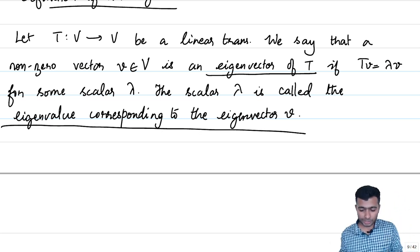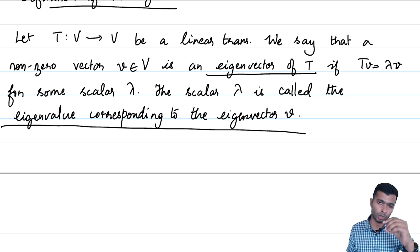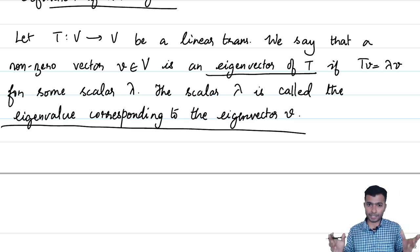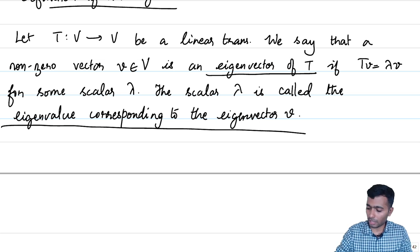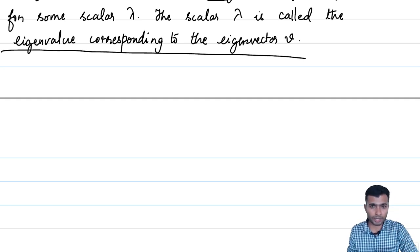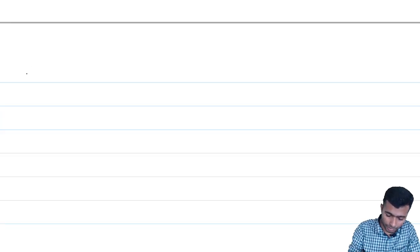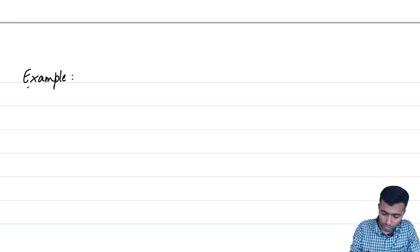We have defined two objects: an eigenvector, which is a non-zero vector in the vector space that is dilated by the linear operator, and the eigenvalue, which is the scalar lambda such that T(v) = lambda * v. Let us look at a few examples, starting with a simple one from R² to itself.